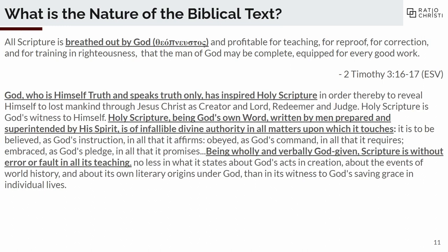Another term is inerrant. This is particularly important if you're an evangelical Protestant. In 1978, there was a statement called the Chicago Statement on Biblical Inerrancy, which has become a staple for evangelical Protestantism. One important excerpt reads: "God, who is himself truth and speaks truth only, has inspired Holy Scripture. Holy Scripture, being God's own word, written by men, prepared and superintended by his Spirit, is of infallible divine authority in all matters upon which it touches. Being holy and verbally God-given, Scripture is without error or fault in all its teaching." Inspired is what the Bible says about itself; inerrant is what inspiration has been interpreted to be. Believing inerrancy is not necessary to be a Christian — you can be a Christian and deny inerrancy.